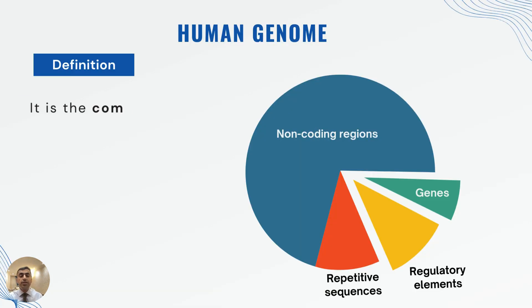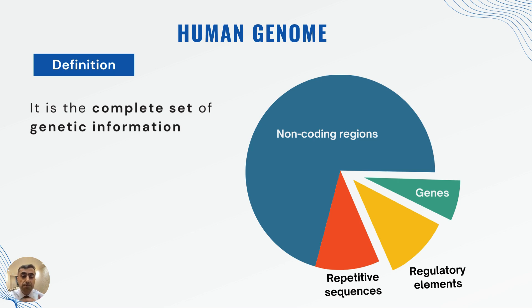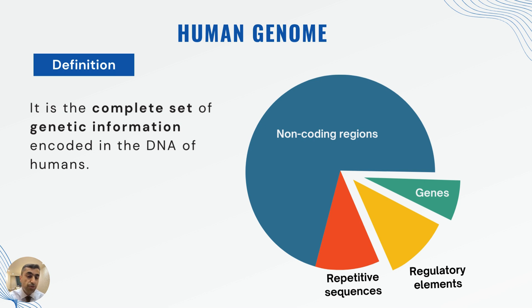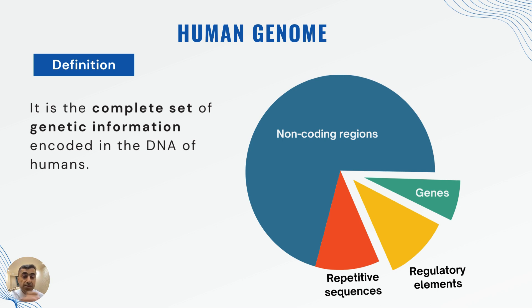The definition of the human genome is a complete set of genetic material that is encoded in our DNA sequence. The human genome includes all of our genes, then regulatory elements, repetitive sequences, plus all the non-encoding regions or non-encoding sequences. These are the main components of the human genome.